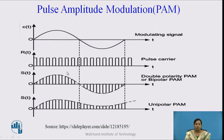Pulse Amplitude Modulation is the type of analog modulation in which the amplitude of a train of pulses changes according to the amplitude of the modulating signal. There are two types of PAM signal: one is a double polarity signal in which positive as well as negative levels are present, and another is a single polarity or unipolar PAM, in which sufficient DC biasing is added so that the train of pulses has only positive levels.